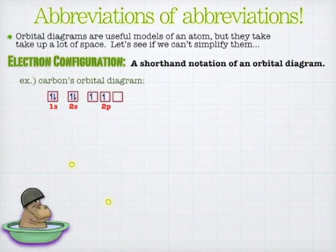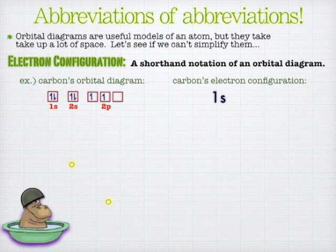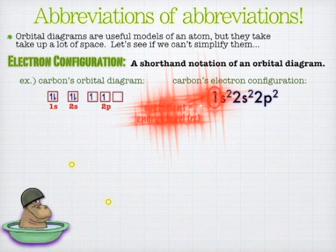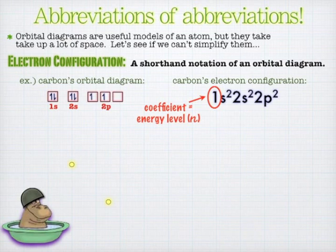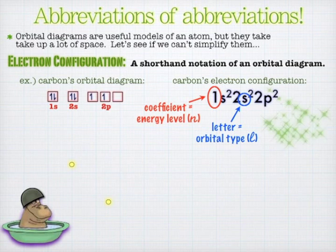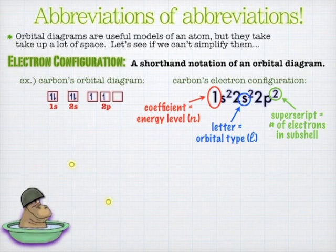So there's carbon. It's got two electrons in the 1s, two electrons in the 2s, and the two electrons in the 2p spread out because of Hund's rule. And so we can write that as 1s², 2s², 2p², where that number one represents the n — the coefficient, the energy level. We can represent the orbital type with the letter of the orbital type, and then the superscript is the number of electrons in the subshell. And that's how straightforward it is: 1s², 2s², 2p².